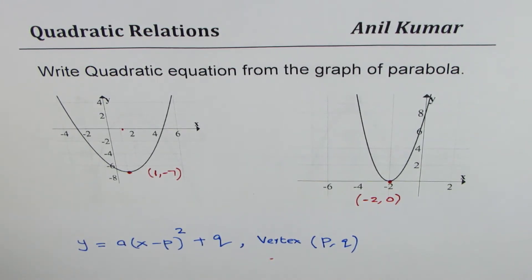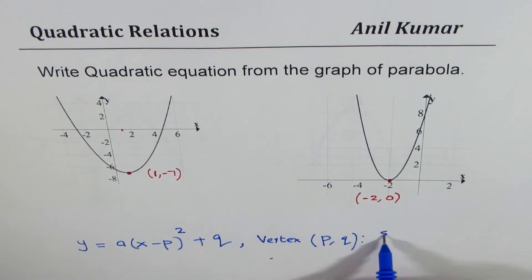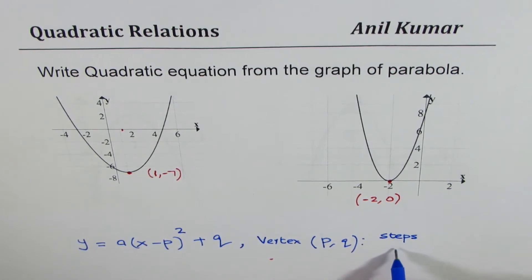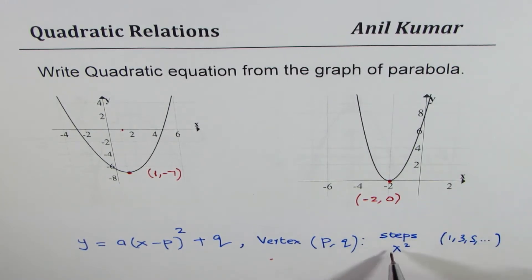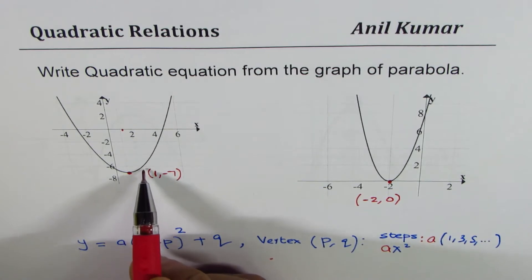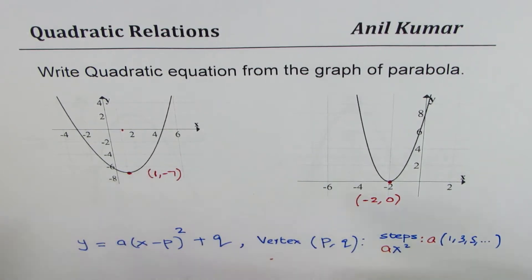Another thing which we are going to use is these steps. Now normally if you consider the graph x square, these steps are 1, 3, 5, 7 and so on. However, if you have a times x squared, then the steps get multiplied by a.